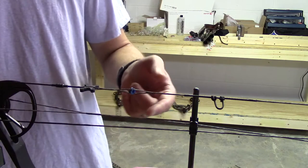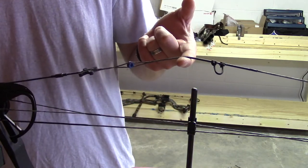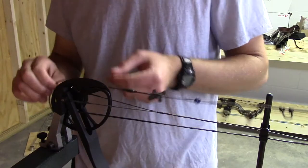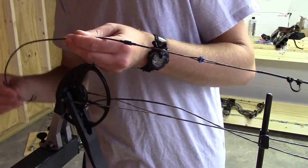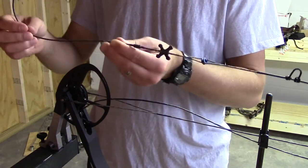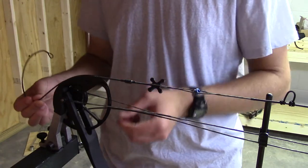To combat this really nasty peep twist, I'm going to press the bow, get a pretty good amount of press in it, take the string off the cam, and I'm going to give it a half twist in the direction it needs to go. Bring it up, half twist that way, I'm going to lay it back in the track of the cam.